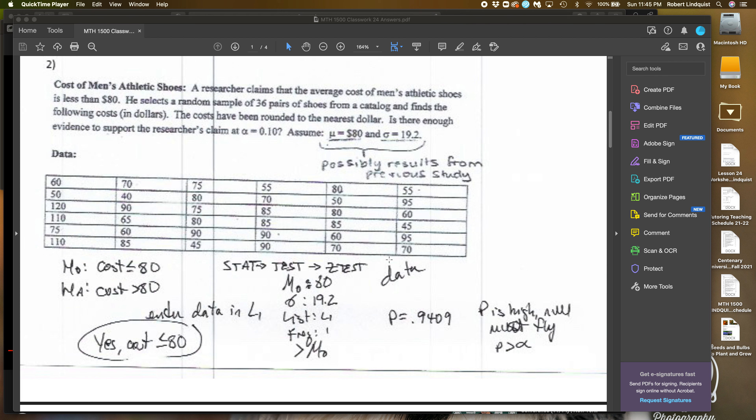Again, I go stat, test, z-test. In this case, the average is $80 in the problem, in the hypotheses. And it's also, the standard deviation is $19.2. So I plug in that for the hypothesis purposes, the number we're looking for is $80. This is $19.2. And here's the important thing. The alternative hypothesis is greater than, so I make sure I choose the greater than graph.